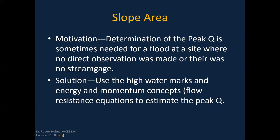So what is the motivation of the slope area method? Essentially, it's a method developed over the years at the USGS and other agencies to determine the peak discharge at a location when you don't have any actual discharge measurements made during the actual event. We use high watermarks and energy and momentum concepts to calculate the peak discharge.